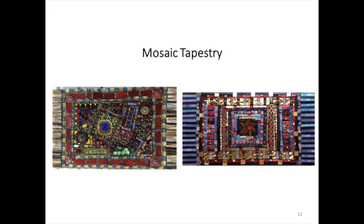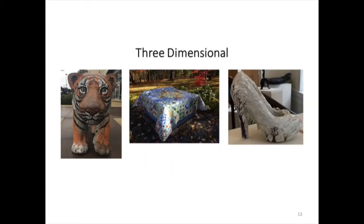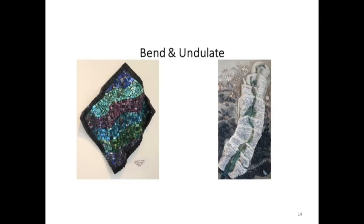The one on the left is organic — it sort of just moves from left to right. And the one on the right has a central piece of fabric. So these are three-dimensional pieces: a bed that's outdoors, a shoe, and a tiger. These are samples of work done by the members of the New England Mosaic Society.